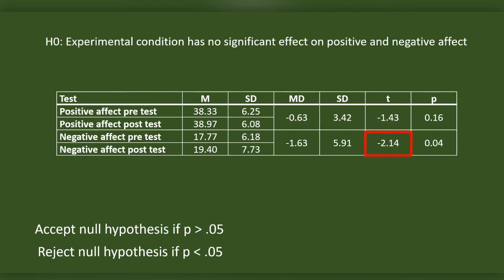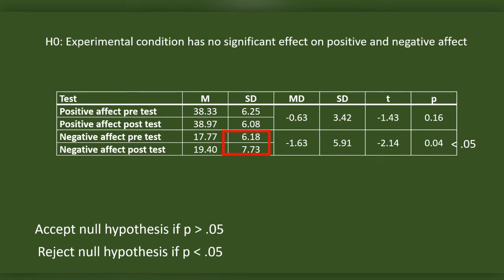The mean difference between pre-test scores is negative 0.63 and the standard deviation is 3.42. T for negative effect is 2.14. P is 0.04, which is less than 0.05, so there is a significant difference between pre-test and post-test scores. Unfortunately, referring to the mean, the negative effect during the post-test is greater than that of the pre-test — negative effect increased with a mean difference of 1.63. However, we cannot say this is the effect of the experimental condition; if we had a control group, we would be able to say that.